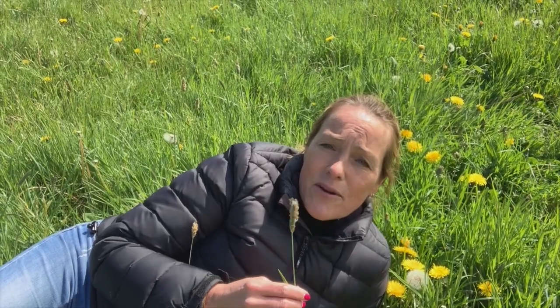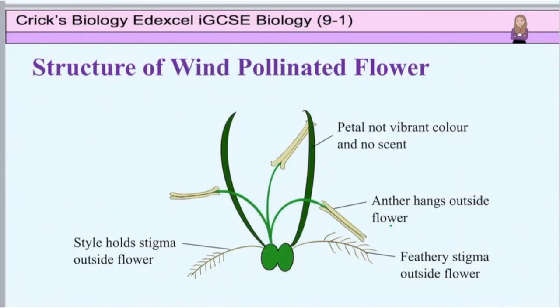Other flowers you might not even realise are flowers, such as grass flowers or catkins on trees. These do not need to be bright or noticeable and they won't smell, as they rely on the wind to pollinate them so they don't need to attract insects. In a wind pollinated flower, they are not brightly coloured and their petals are often small. The anthers hang outside the flower to catch the wind so the pollen can be blown to another flower. They produce far more pollen than insect pollinated flowers, and the pollen is much smaller, lighter, and some even have air pockets. These flowers have a feathery stigma which also dangles outside the flower ready to catch pollen as it blows by.